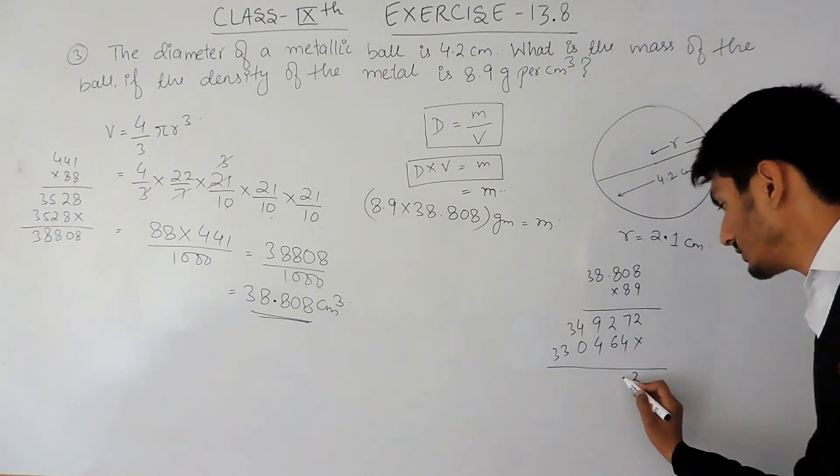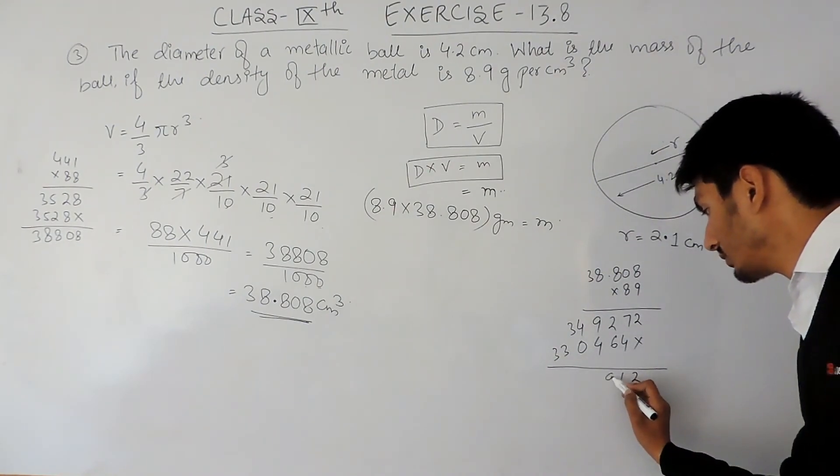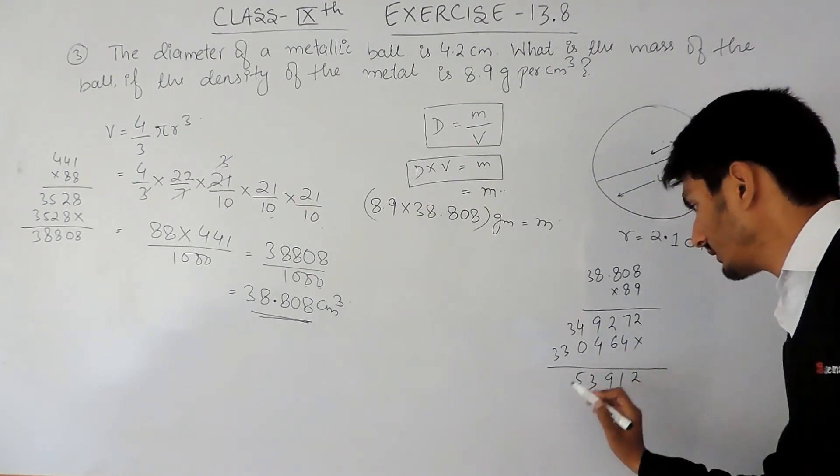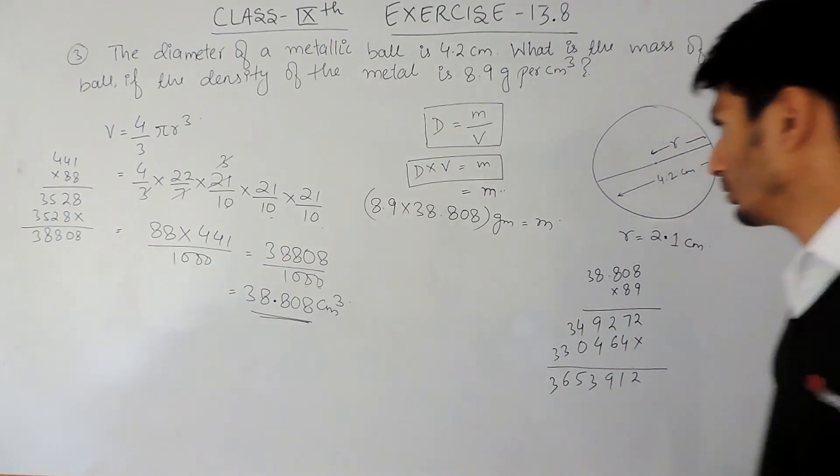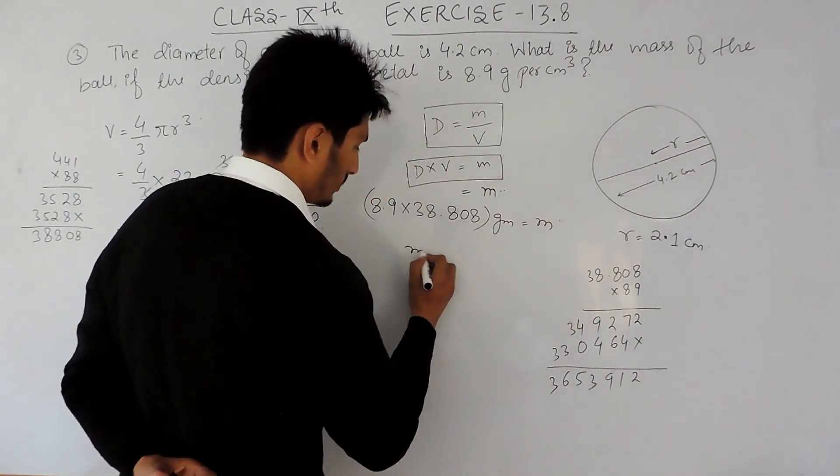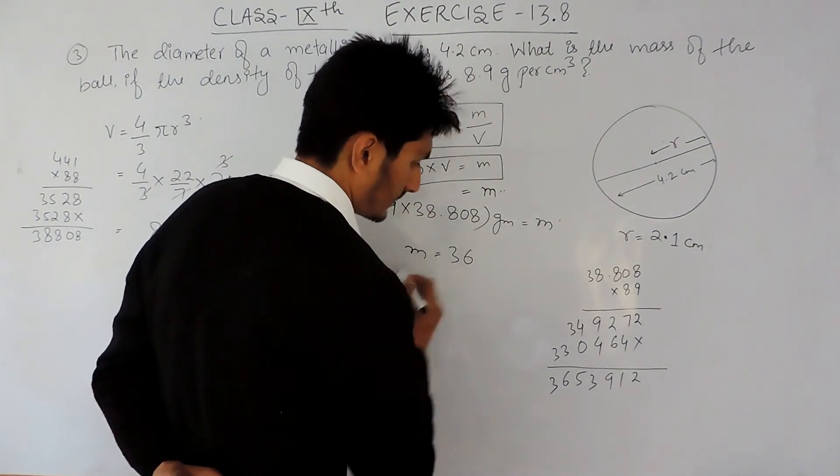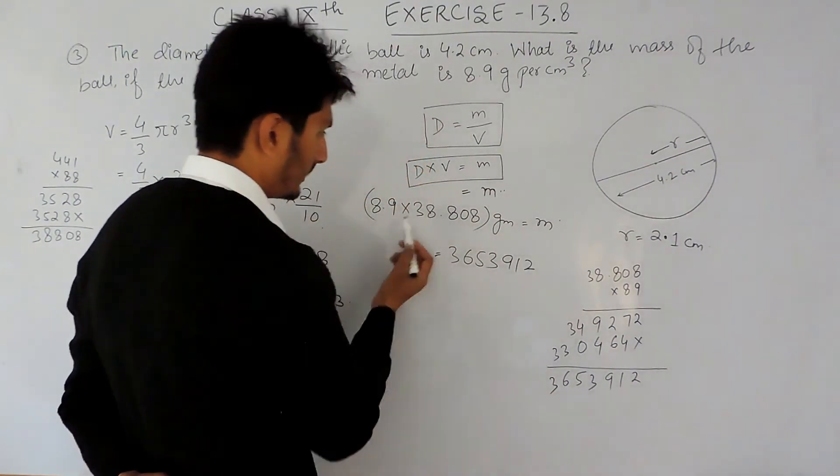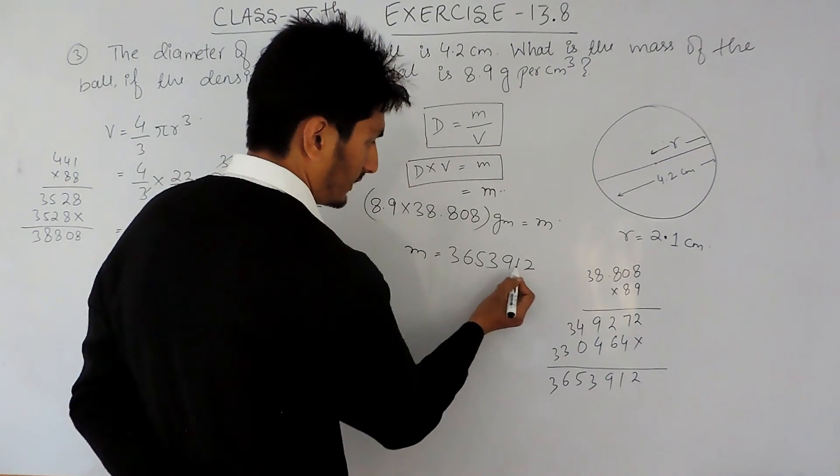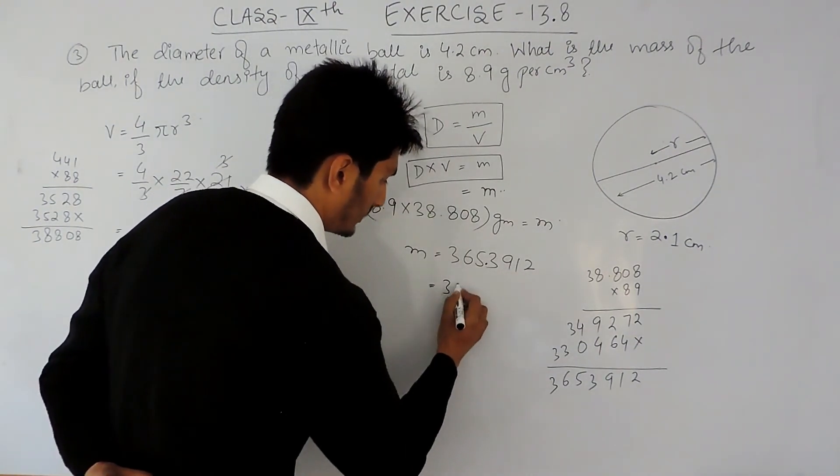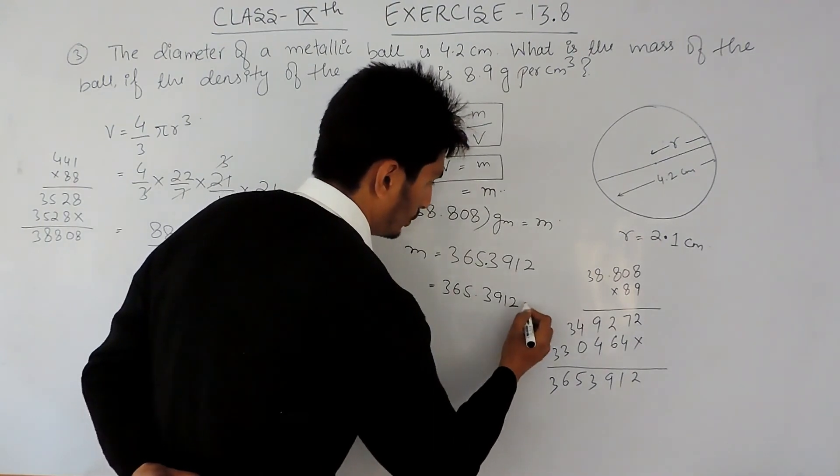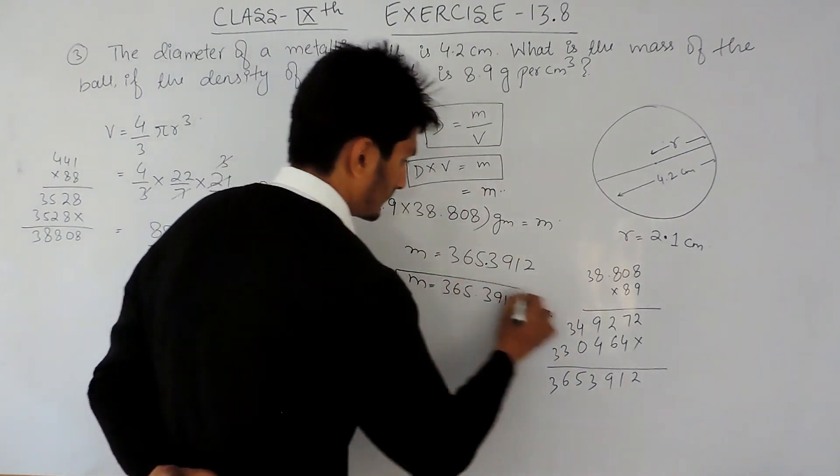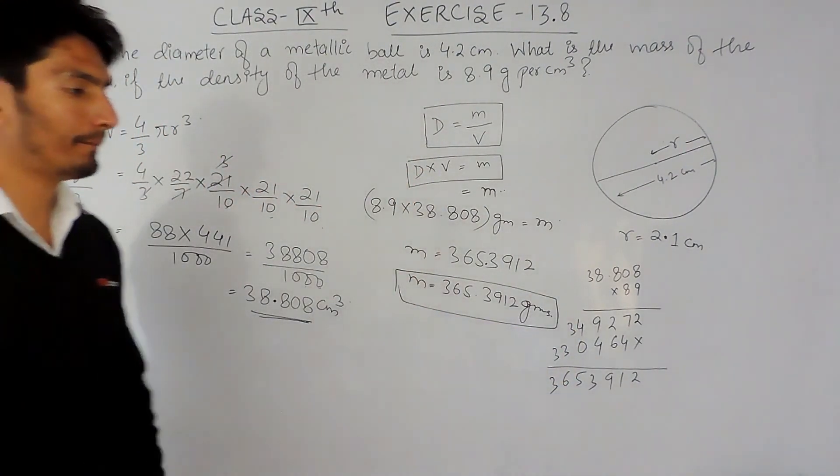So the mass of this metallic ball should be 3, 4, 5, 3, 9, 1, 2, and there were 1, 2, 3, and 4 decimals. So 1, 2, 3, 4. So it should be 345.3912 grams should be the mass of this metallic ball.